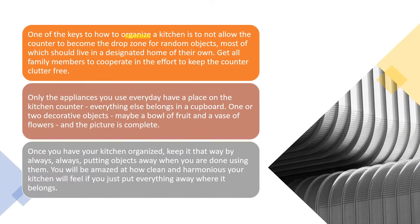Kitchen counters. One of the keys to organizing a kitchen is to not allow the counter to become the drop zone for random objects, most of which should live in a designated home of their own. Get all family members to cooperate in the effort to keep the counter clutter-free. Only the appliances you use every day have a place on the kitchen counter; everything else belongs in a cupboard. One or two decorative objects — maybe a bowl of fruit and a vase of flowers — and the picture is complete. Once you have your kitchen organized, keep it that way by always putting objects away when you are done using them.